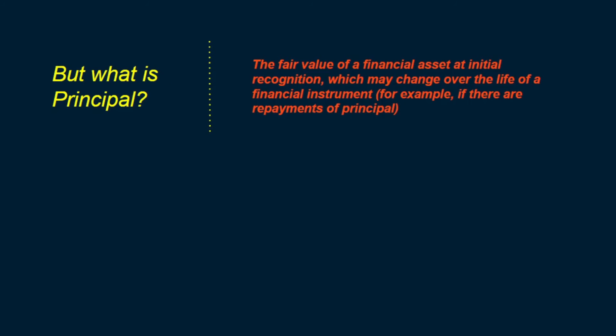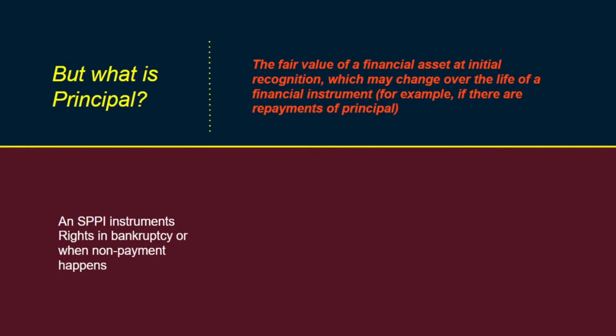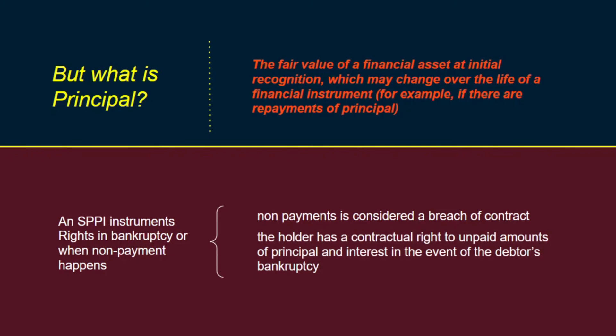What concerns us most is what happens if the right to receive principal or interest is impaired due to certain events. One such event is bankruptcy. An instrument's contractual cash flows are SPPI only if, in the case of a debtor's non-payment, non-payment is considered a breach of contract and the holder has a contractual right to unpaid amounts of principal and interest in the event of the debtor's bankruptcy. If the holder does not have the right over unpaid amounts, it is not considered solely payments of principal and interest.